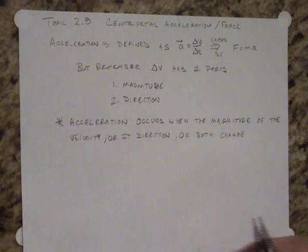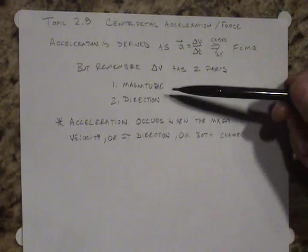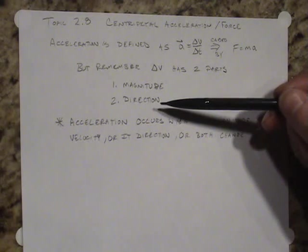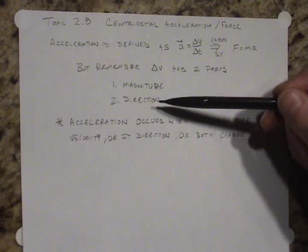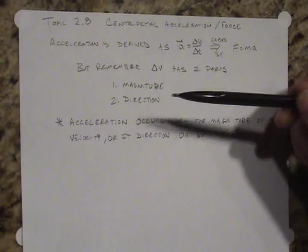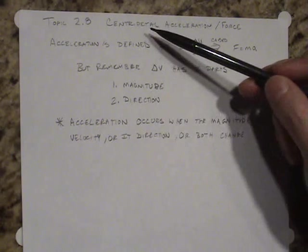So acceleration is said to occur when either the magnitude of the velocity or its direction or both change. Now in the past we've only looked at the magnitude of the velocity. We didn't allow the direction of the velocity to change.